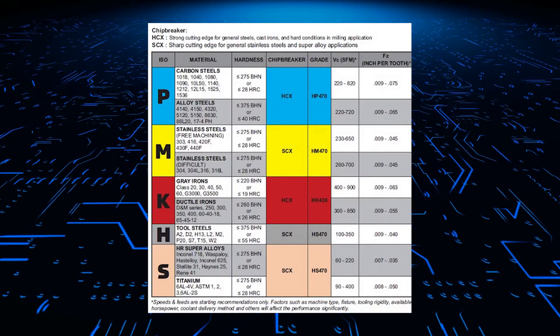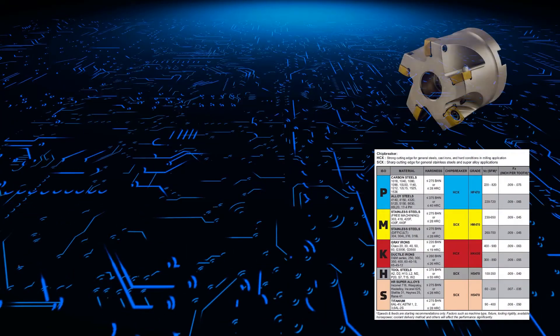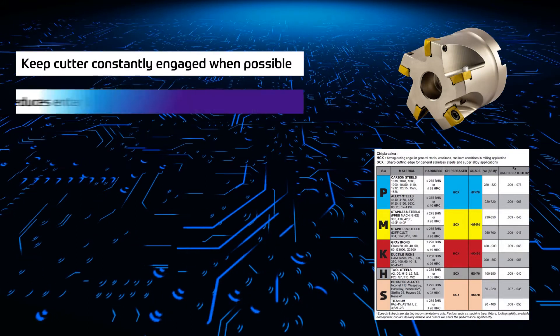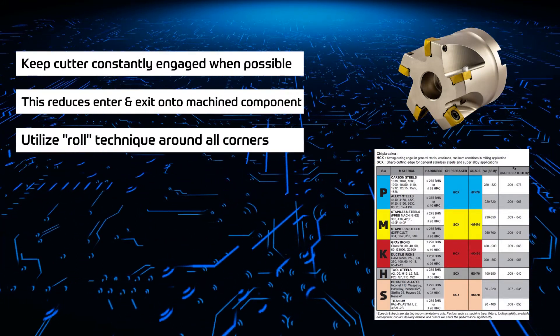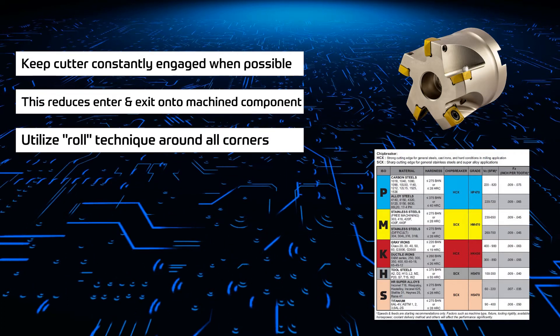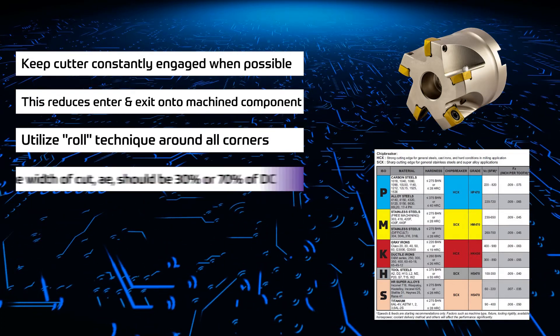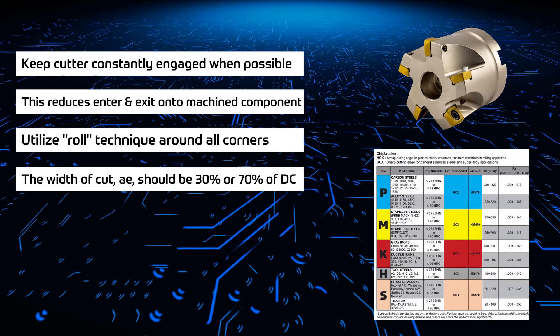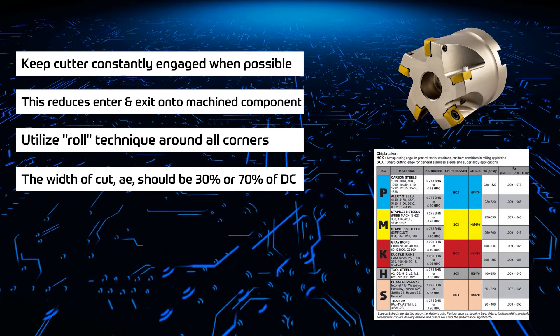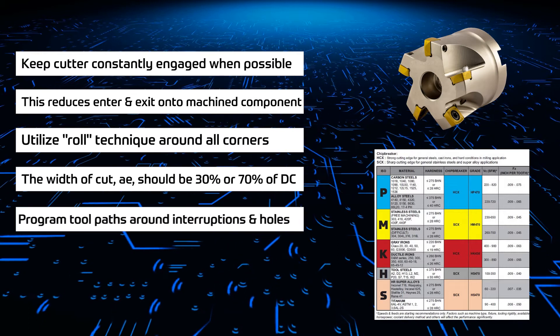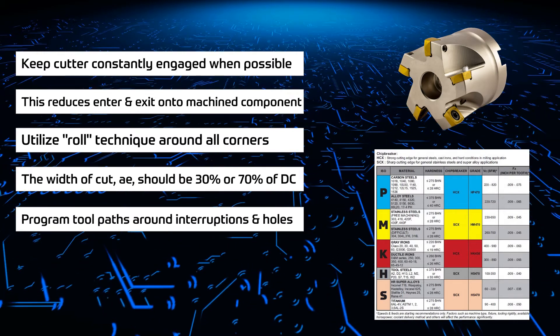How to apply the cutter and the inserts. Keep the cutter constantly engaged when possible to reduce enter and exit onto the machine component. Utilize roll technique around all corners to avoid harsh directional changes. The width of cut AE should be 30 percent or 70 percent of DC to ensure maximum efficiency and process security. Program tool paths around interruptions and holes when possible.